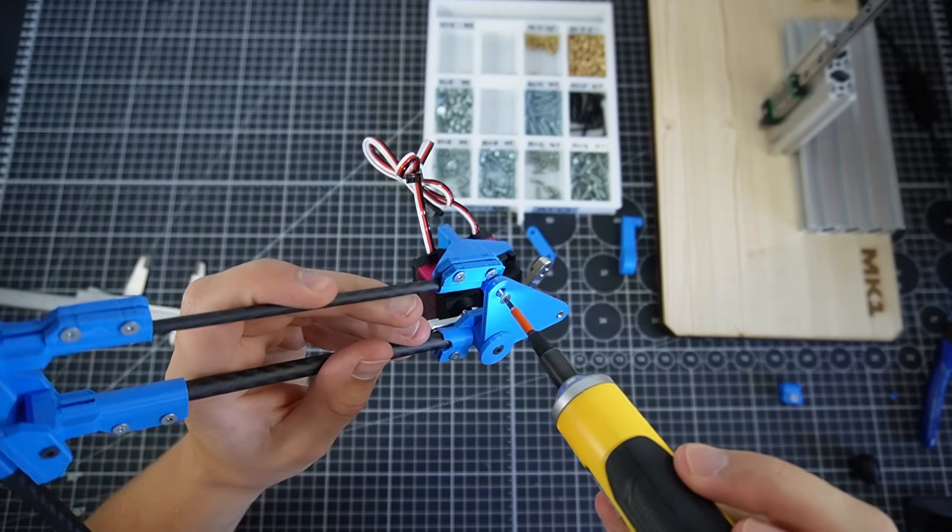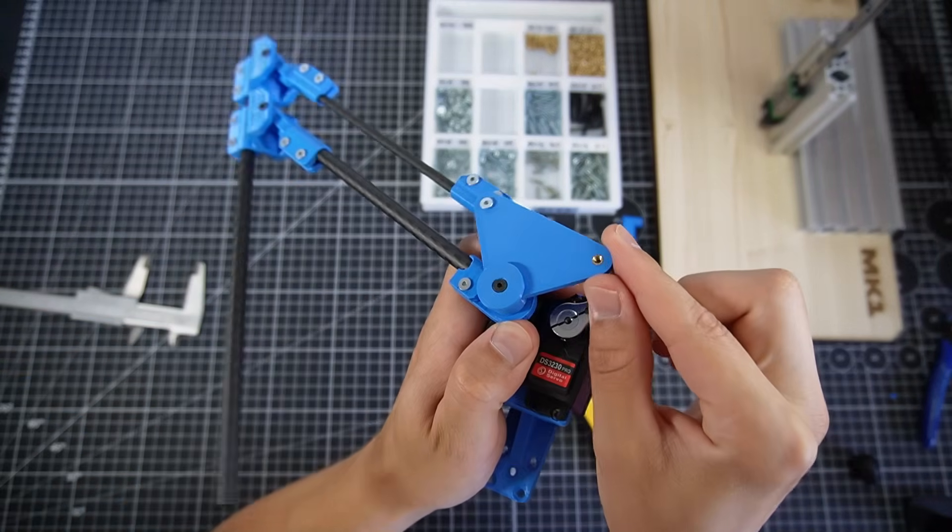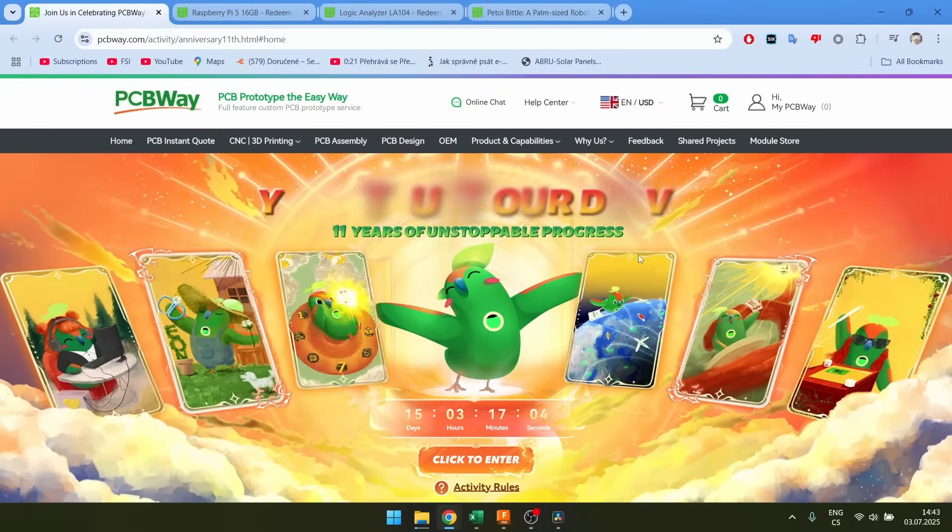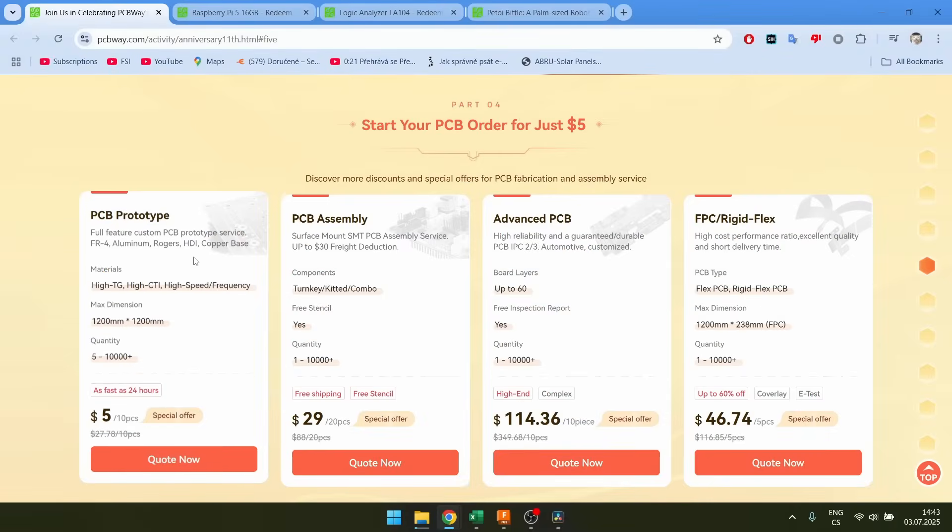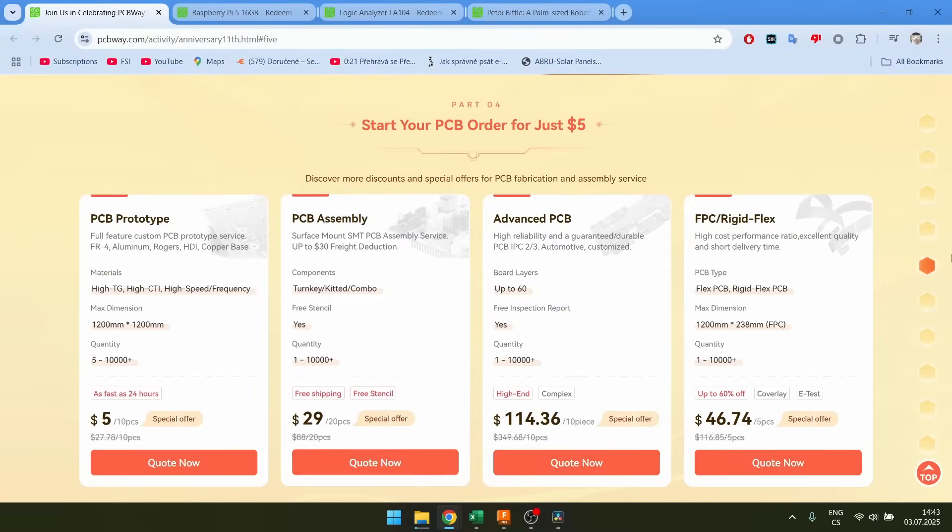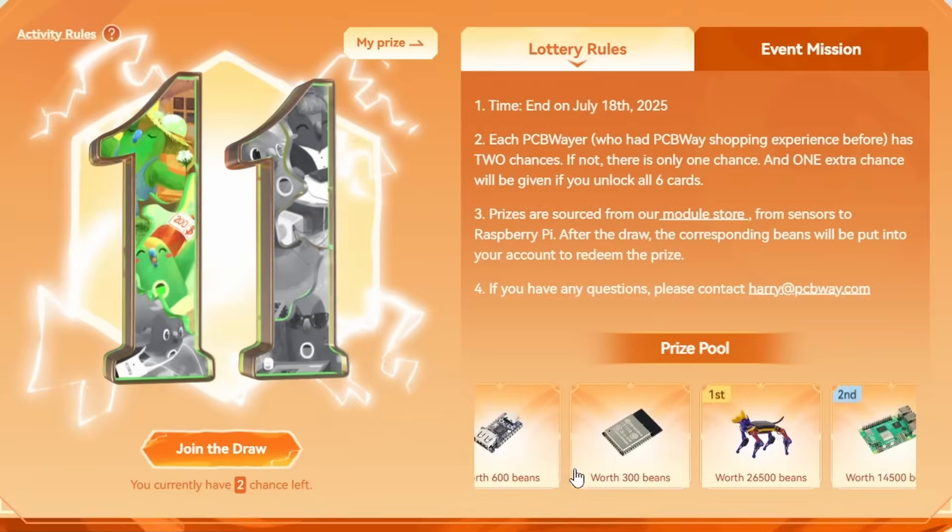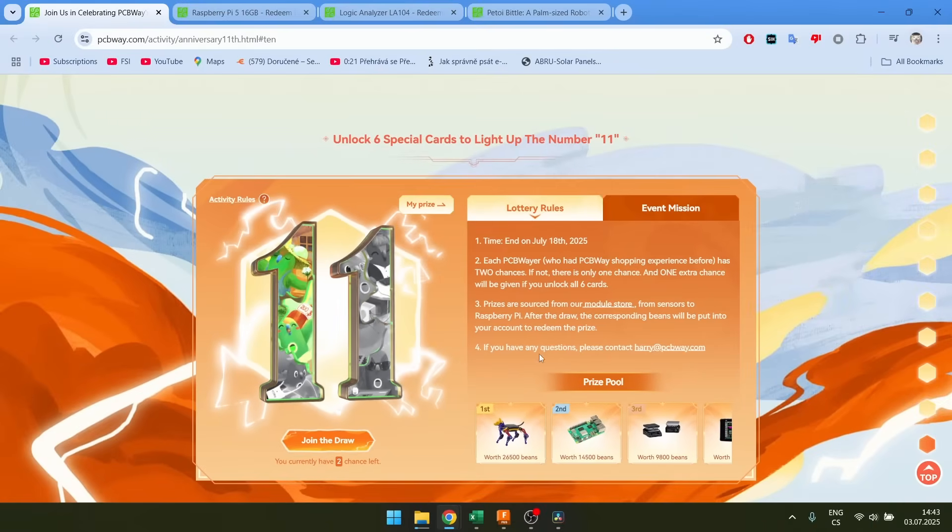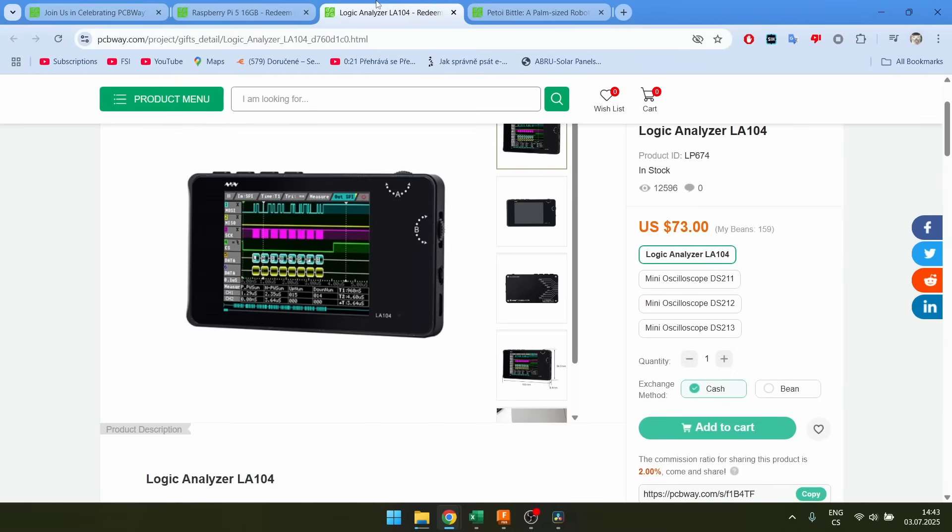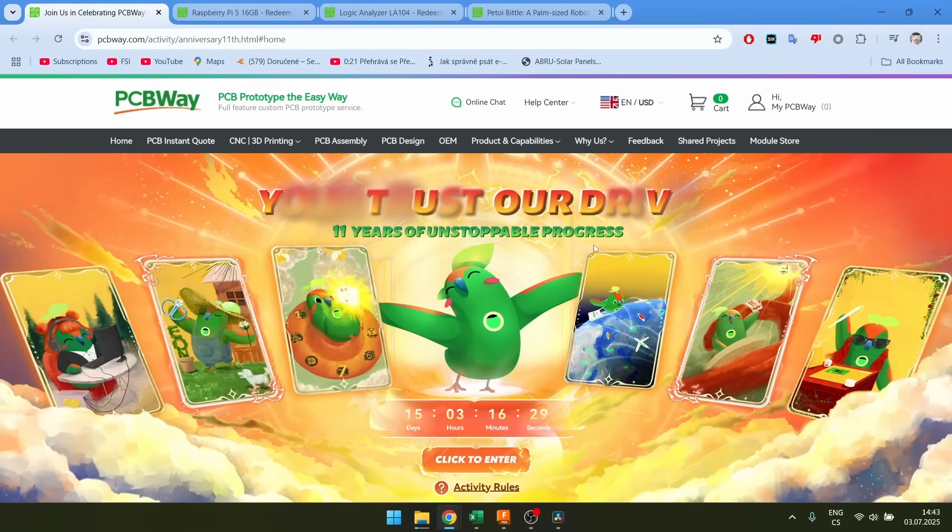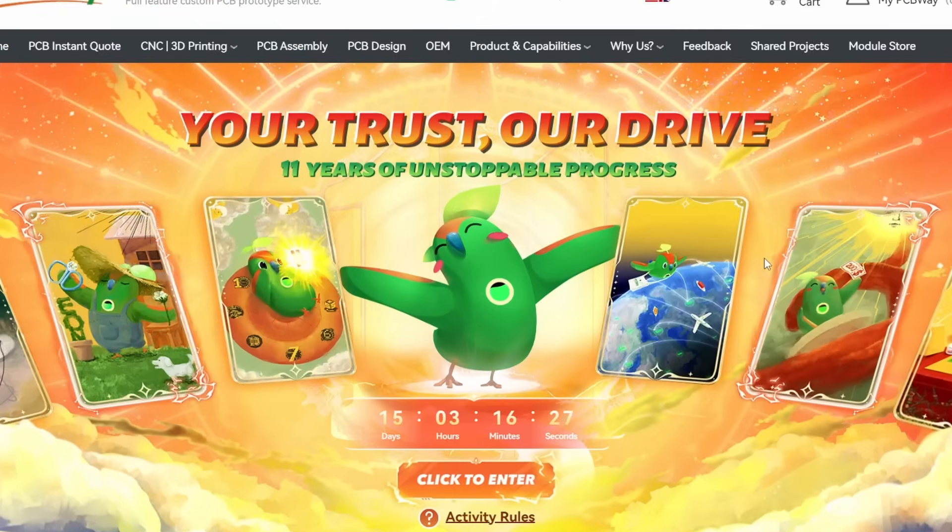Before we assemble the leg, I want to show you my sponsor, which I think you'll find useful. PCBWay is celebrating its 11th year anniversary and they are offering a bunch of discounts. There's discounts for PCBs and PCB assembly, but also for manufacturing stuff like 3D printing and CNC machining. There's also this lottery with an interesting prize pool, so you can win stuff like Raspberry Pis, oscilloscopes, and the first prize is actually a robot dog, which is quite thick. So if you're making some projects, now it's the time to buy.